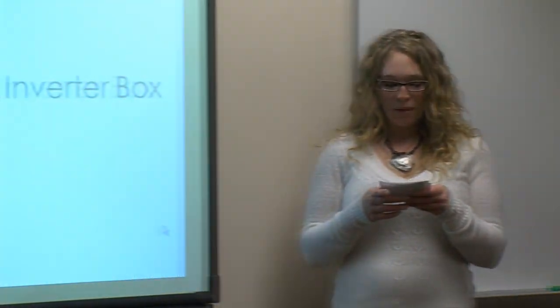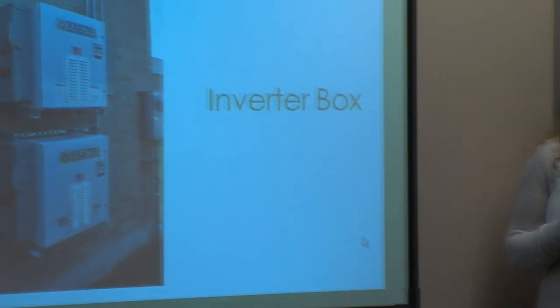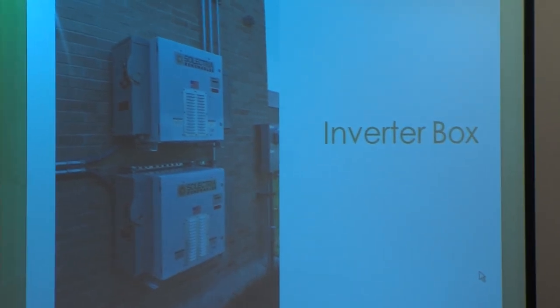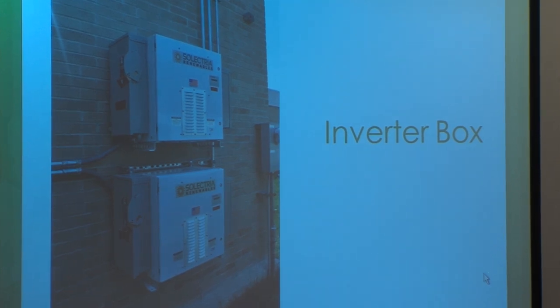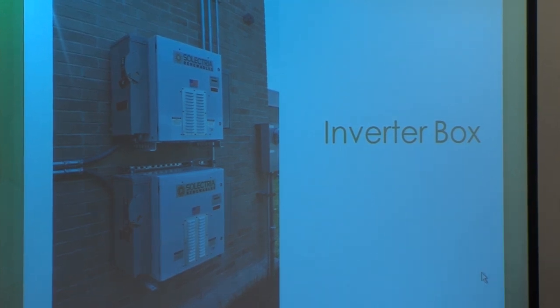You have the inverter box. The electricity comes in as a DC current, but in order for Great Bay to be able to utilize the electricity, we need it in an AC current, and this inverter box helps us do that.